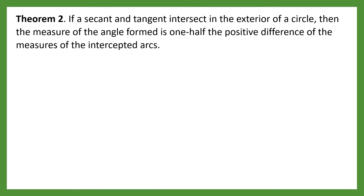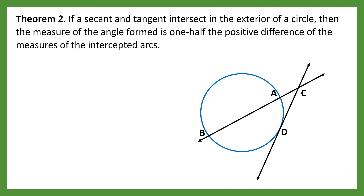Here we have a secant and tangent intersecting in the exterior of a circle. The measure of the angle formed is one half the positive difference of the measure of the intercepted arcs. Here is the figure — that is a tangent and that is a secant. They form an angle which is angle BCD. The measurement is one half the positive difference of the intercepted arcs.